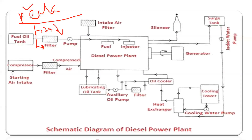The second point is that its capacity is nearly about 2 megawatt to 50 megawatt. So basically, we get the idea that the maximum capacity of a diesel power plant — we can establish the plant for up to 50 megawatt.